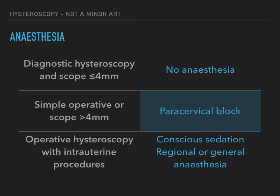Most women are able to undergo diagnostic hysteroscopy without anesthesia. Not using anesthesia appears particularly appropriate for diagnostic procedures when using a hysteroscope that is less than 4 mm in diameter. For women undergoing simple operative hysteroscopy, for example removal of an intrauterine device, or hysteroscopy with a hysteroscope 4 mm or larger, a paracervical block is preferred as it is low cost, well tolerated, and reduces some aspects of pain. Women undergoing operative hysteroscopy with intrauterine procedures like myomectomy typically require additional pain control beyond that provided by a paracervical block. Options include conscious sedation and regional or general anesthesia.